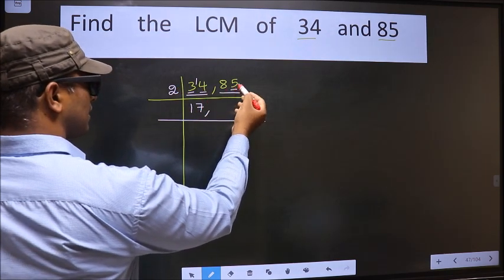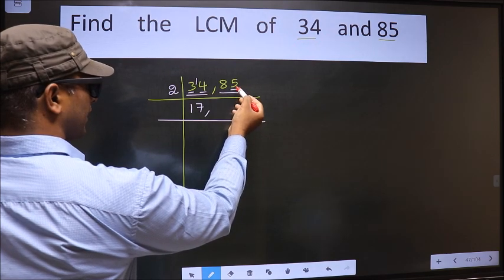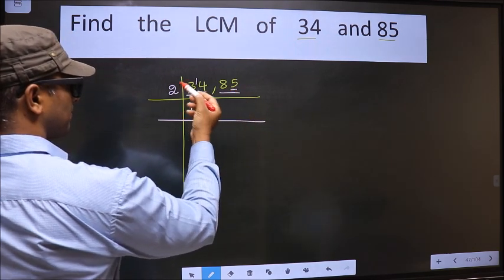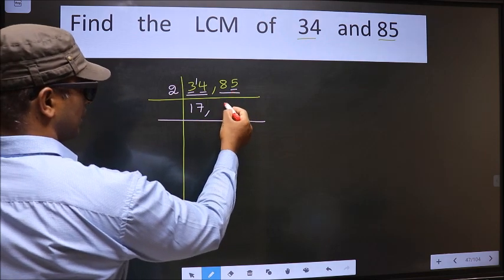Now the other number, last digit 5 which is not even. So this number is not divisible by 2. So you write it down as it is.